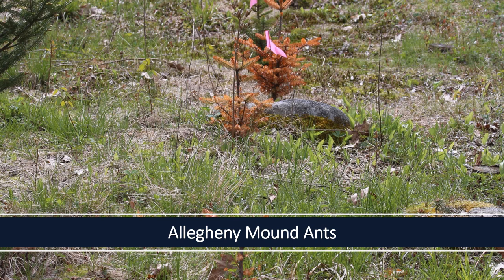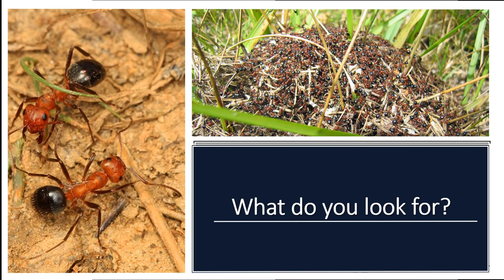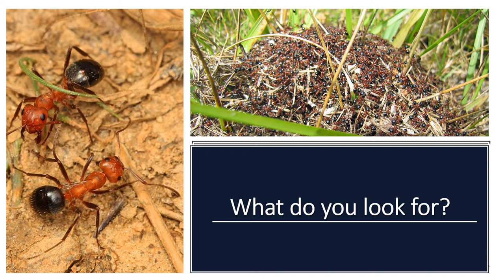Allegheny mound ants can be major pests in Christmas tree plantations. These ants are non-discriminatory and will kill all vegetation within 20 feet of their mound or nest, including seedling or sapling conifers. Look for clumps of dead and dying trees, symptoms of injury around the base of the tree, and check for small blister-like swellings. Look for the mounds, and also for the ants themselves. Both workers and queens have a reddish-orange head and thorax, and a black abdomen and legs. Workers vary in size from 3 to 6 millimeters long, while queens range from 9 to 12 millimeters.